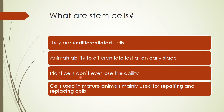Plant cells don't ever lose the ability to differentiate, so if we cut off a flower or the stalk they do have the potential to grow that back. As I've said, stem cells are mainly used for repair and replacing — nothing major like growing back whole new limbs.